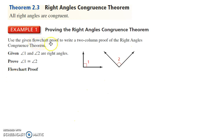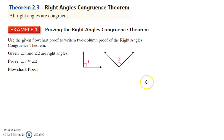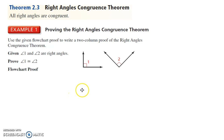We are supposed to make a flowchart proof. What is a flowchart proof? We've looked at two-column proofs, where on one side we state a statement and on the other we say it was given, then we make our statements. A flowchart proof is basically the same thing, just in a different shape.